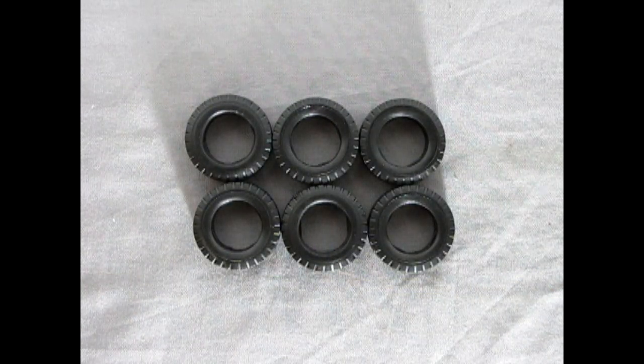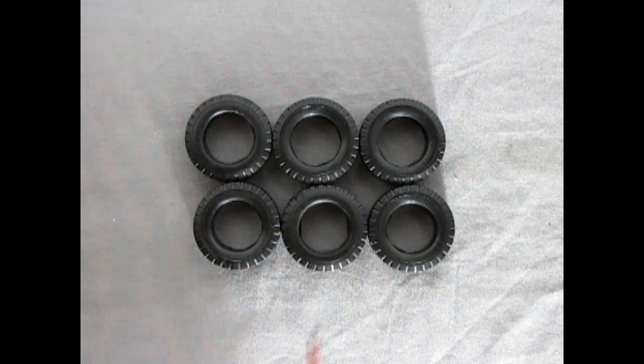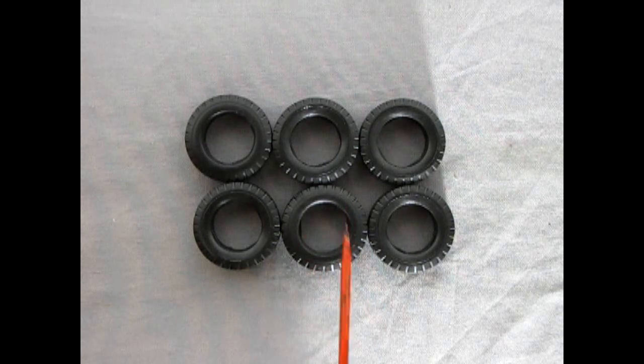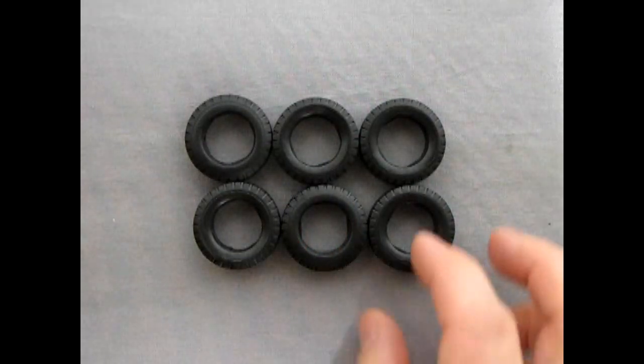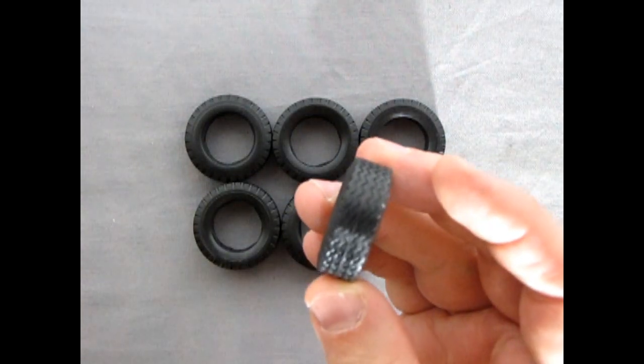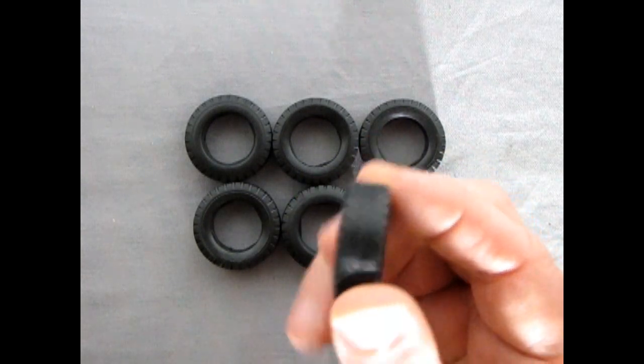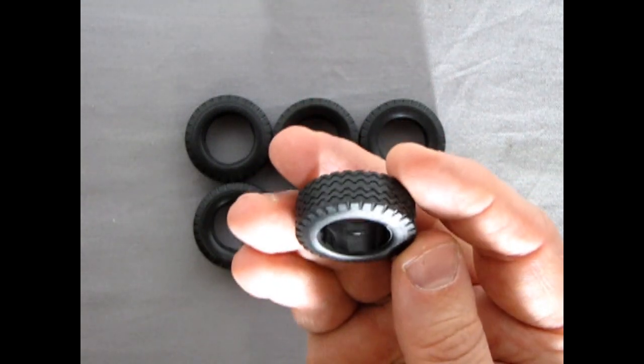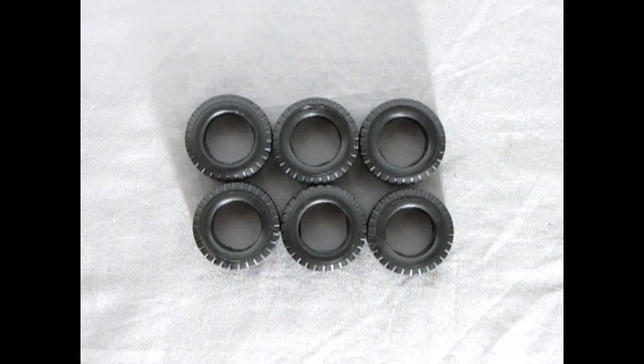Next we have our tires for our GMC wrecker and as you can see there are no names on the side walls so they're very generic. But the tread pattern on here is really quite nice and it will look like an accurate heavy duty truck once you get these all put in place.